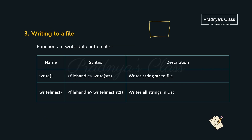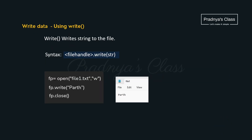Once the file is created, we need to write data to it. There are two options: the write() function and writelines(). The write() function writes a single string to the file, whereas writelines() writes a list of strings. All file functions work on the file handle, or file object. The write() function takes a string and works with the file object. If we are using a text file, we write the extension as .txt. Always the final step will be closing the file.